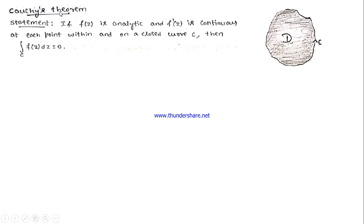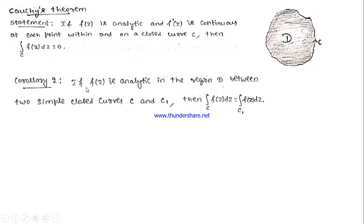Let me revisit Cauchy's theorem. It says if f is analytic in the region bounded by the closed curve C, then integration of f over the closed curve C is 0. By using this, we can look into Corollary 2, which says: if f is analytic in the region D between two simple closed curves C and C1, then the integration of f over C and C1 are the same.